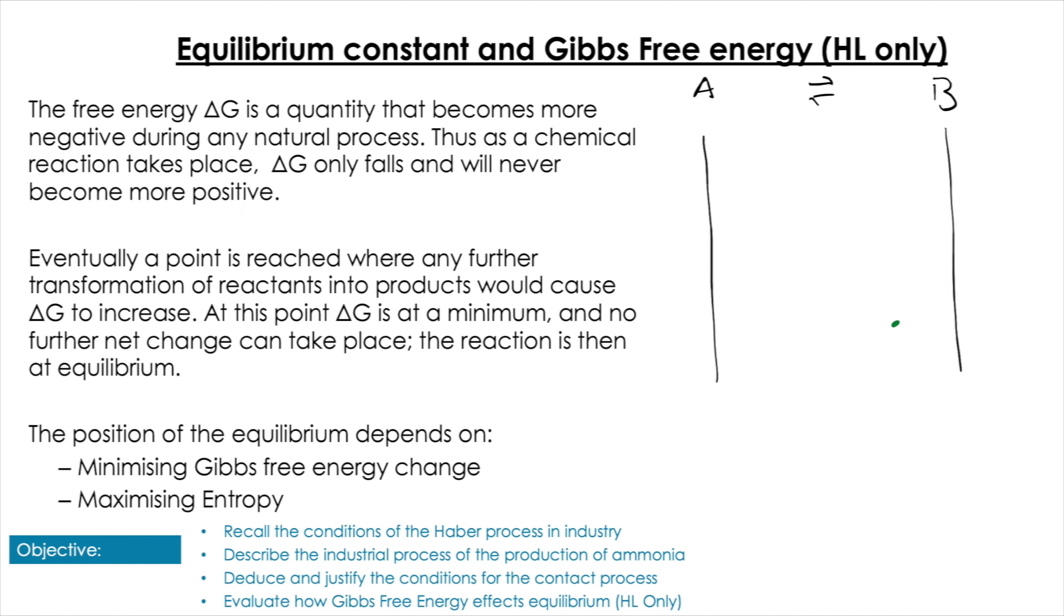So if we just imagine we start here with A as the highest point for our ΔG value—100% A—then we come down to the point of equilibrium and then up to B. So this is showing us that ΔG can decrease to a minimum point, and that minimum point is our equilibrium.